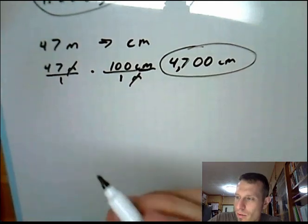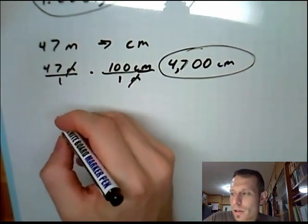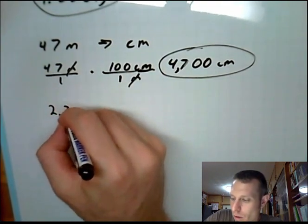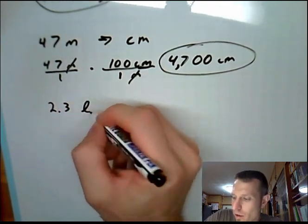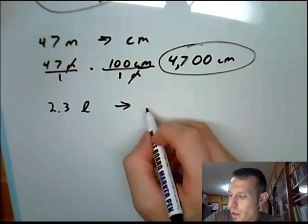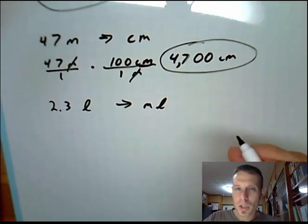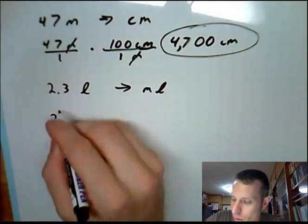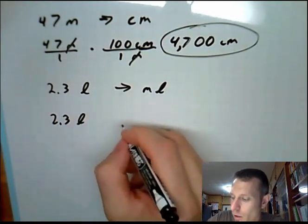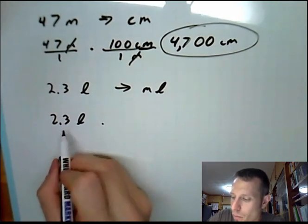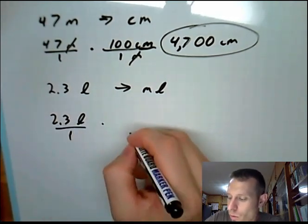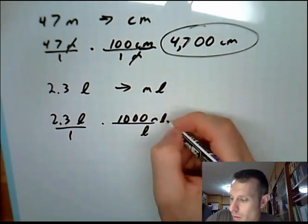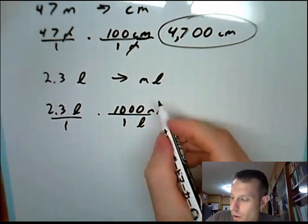And let's do one with volume. And so volume, the metric unit is liters and milliliters and all that. So we'll do 2.3 liters. And we want to convert that to milliliters. Well, we know that 2.3 liters. And what's something we can multiply times that equals 1 if liters is on the bottom? Well, there's 1,000 milliliters in 1 liter.